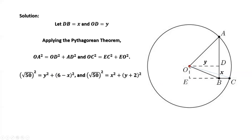In this right triangle OEC, OC is the radius, square root of 50. EO equals X. EC equals EB plus BC, where EB equals Y and BC equals 2, which gives Y plus 2.